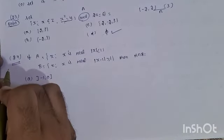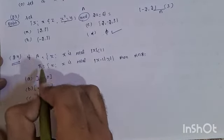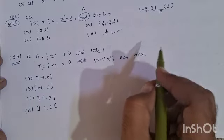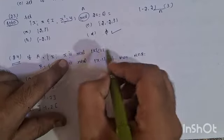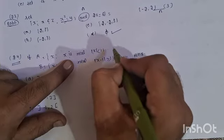Let's see problem number 24. Set A and Set B are two intersections. Set A is defined as X is a real number where the modulus of X is less than 1.